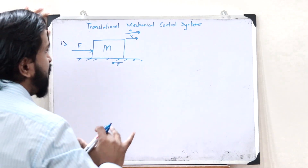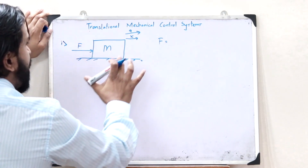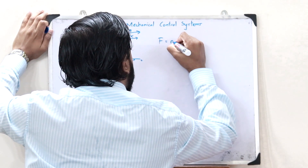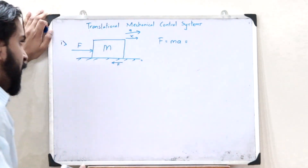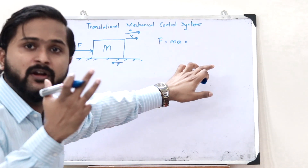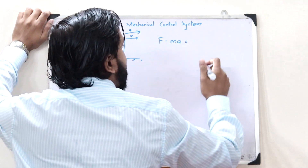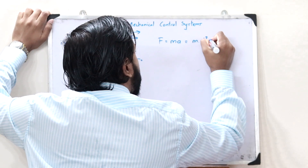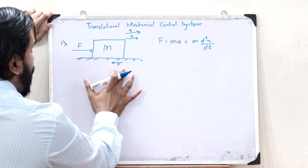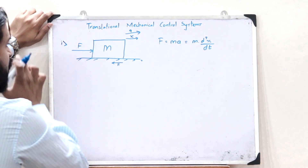That opposing force is given as F equals this particular mass m into this particular acceleration a — that is F equals ma. Now we know that acceleration is the second order derivative of displacement. So therefore we get F equals m into d²x/dt². This is the opposing force that is present while we apply a force on a particular mass.